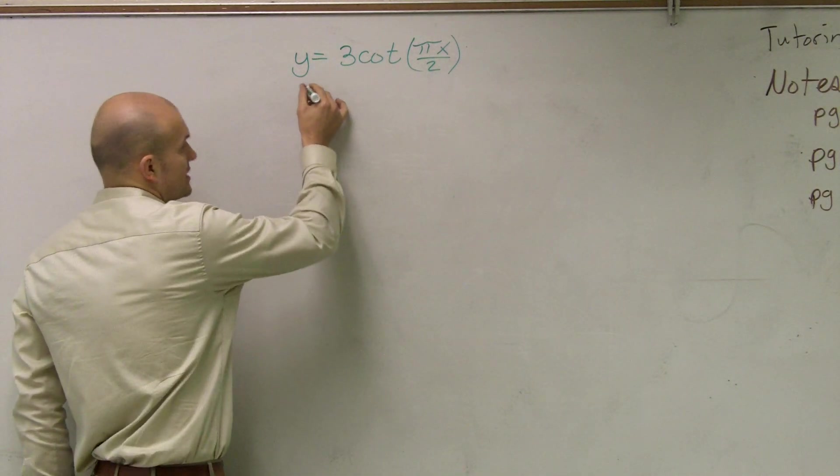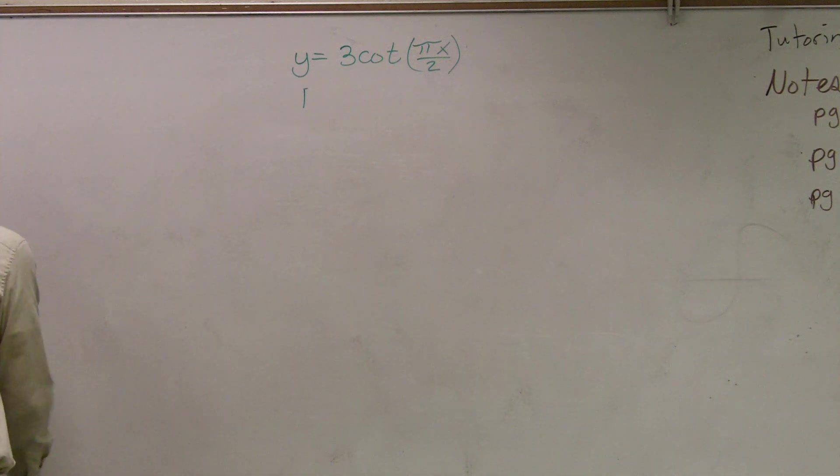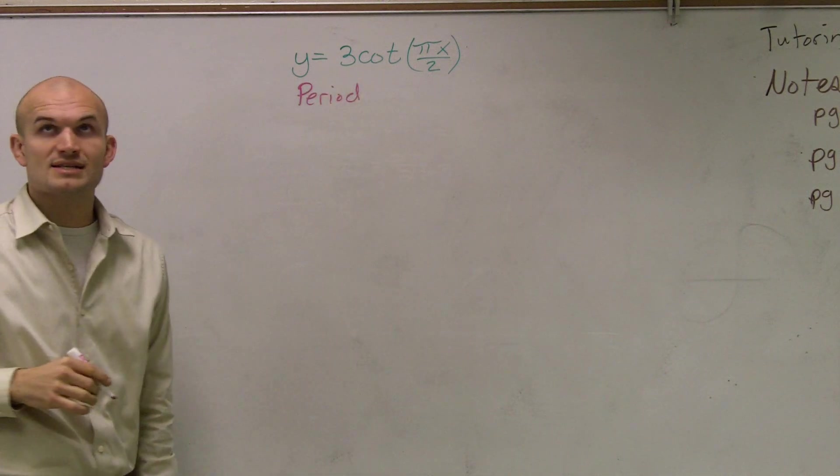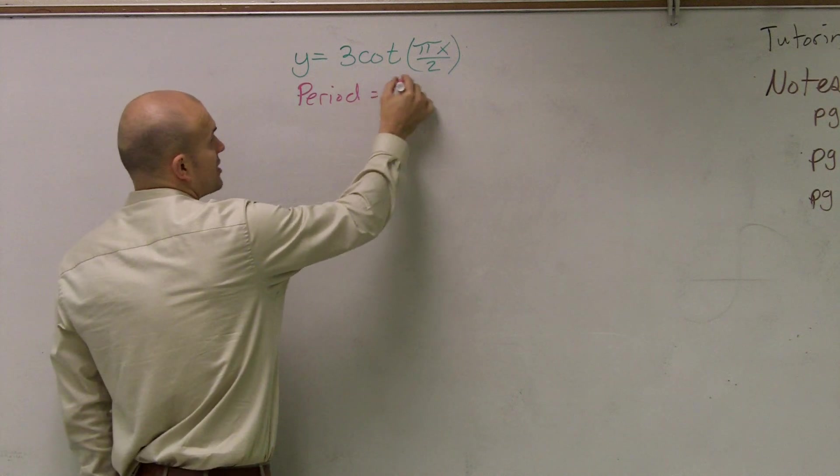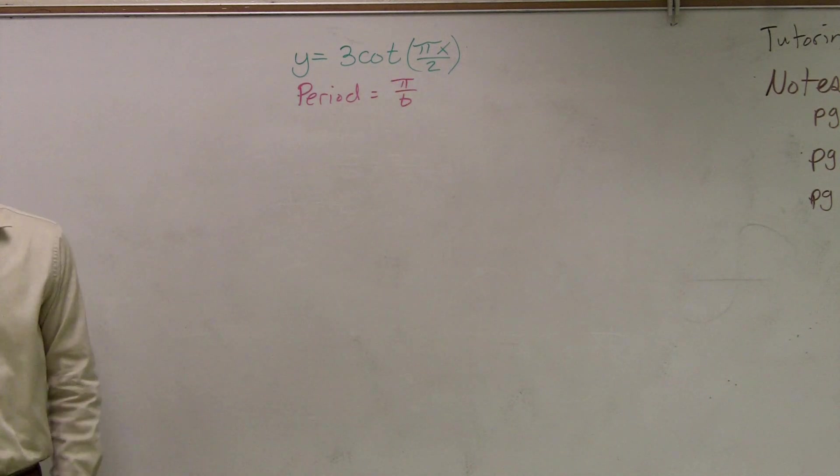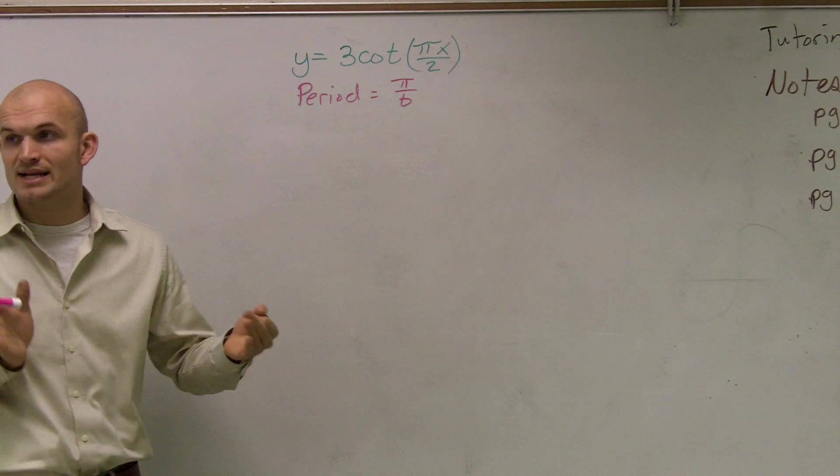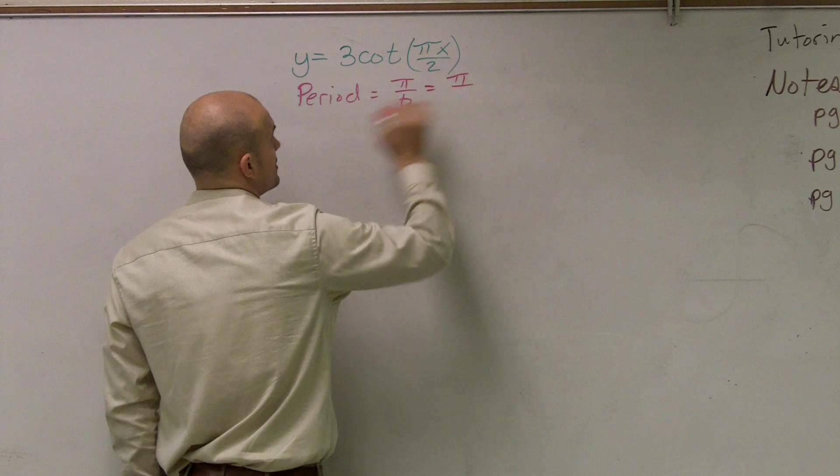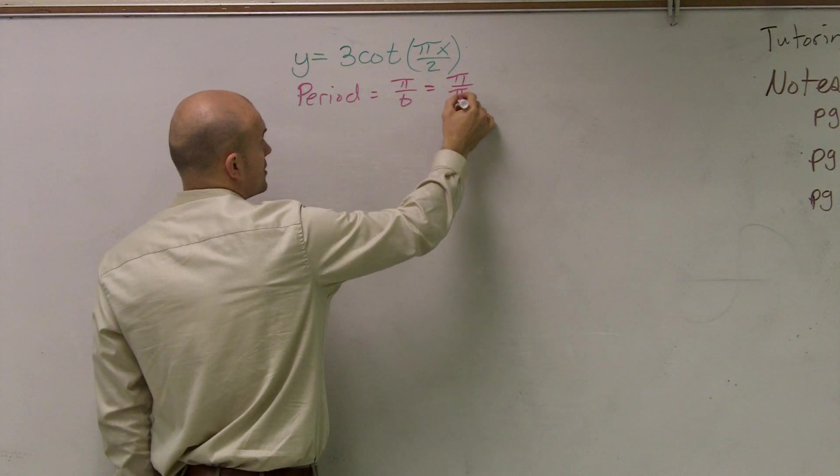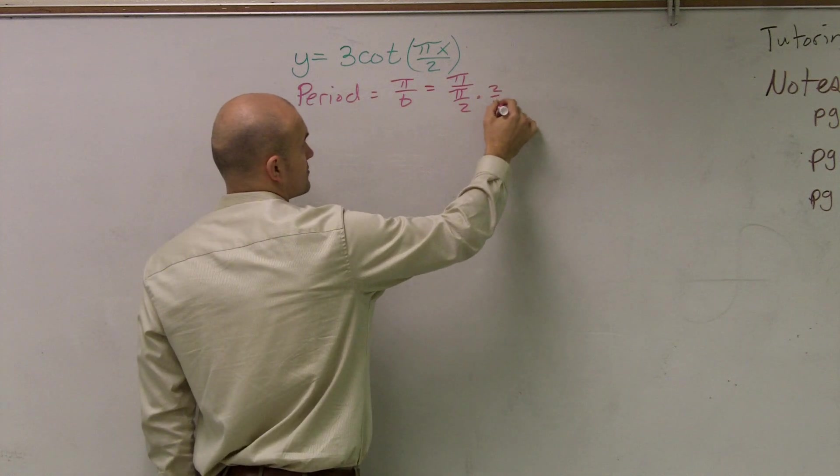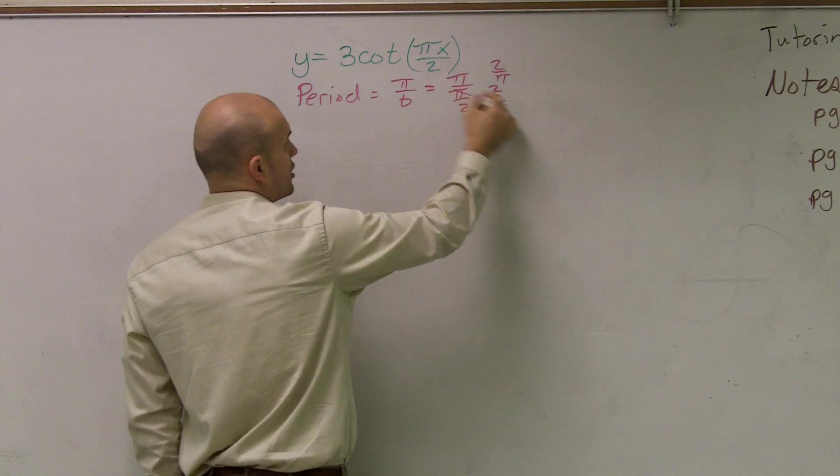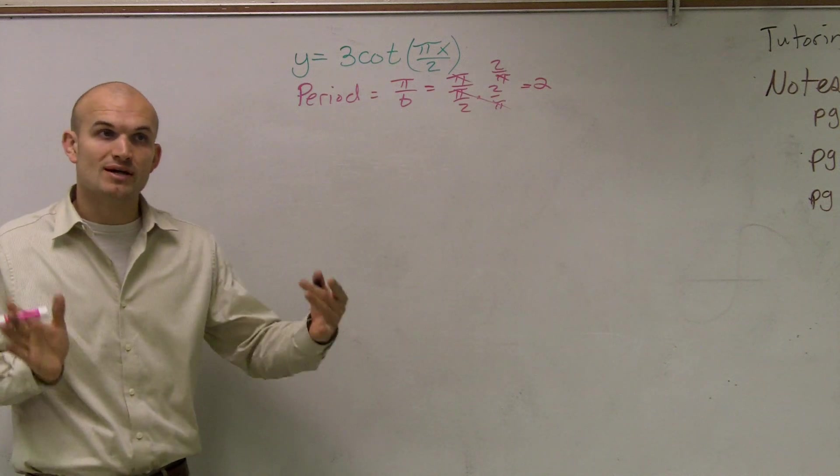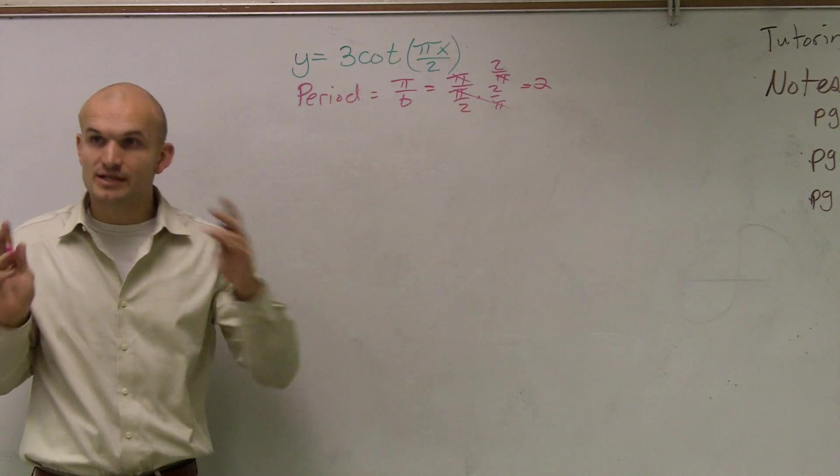The next thing we need to understand is what our period is. Unlike sine and cosine, the period is now going to be pi over b. Remember, the period is the distance that it's going to take your graph to complete one function. So b in this case is going to be pi over 2. So I take pi over pi over 2, multiply by the reciprocal, and those pis cancel out, and we're left with 2. Therefore, the distance that it's going to take for us to complete one cycle in this cotangent graph is going to be 2.